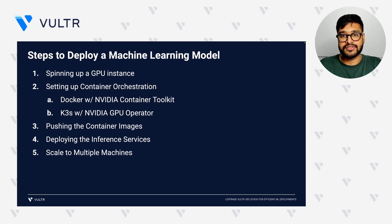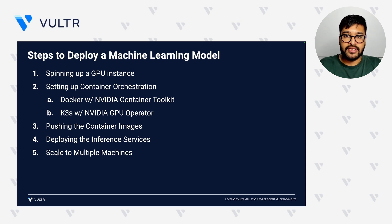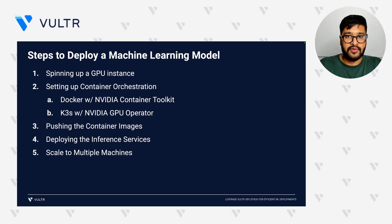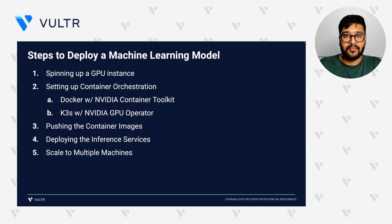First, we will spin up a GPU instance that will provide the necessary computational power required for complex ML workloads. Next, we will set up container orchestration to avoid dependency issues and ensure smoother operation. Container orchestration tools like Kubernetes make it easy to manage and deploy containerized applications. Next, we will push container images to a container registry, then deploy our inference services for real-time use. Finally, we will scale our deployment to multiple machines to handle increased workloads and redundancy.